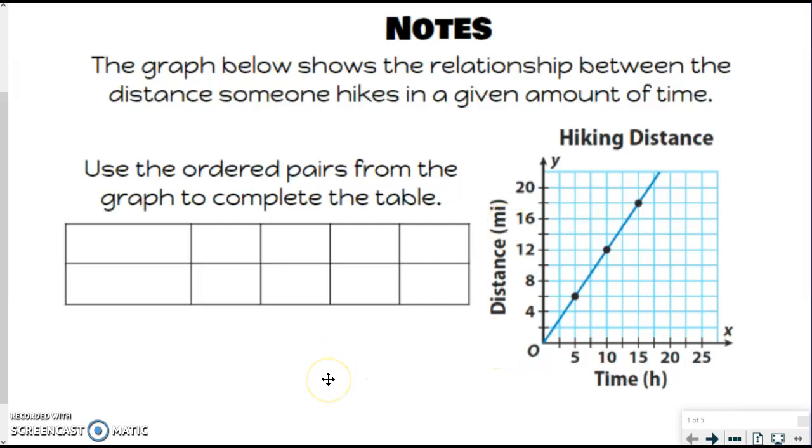The first thing we want to do is label our different quantities, our units. We typically want to start with the x on the top. Not that it always has to be on top, but we typically start with x and then do y. If this was a vertical table, we would usually have x on the left and y on the right. With that being said, our x, which is labeled here on the bottom, the horizontal axis, is time. We're going to put time with h in parentheses because it's measured in hours. Go ahead and fill in your table.